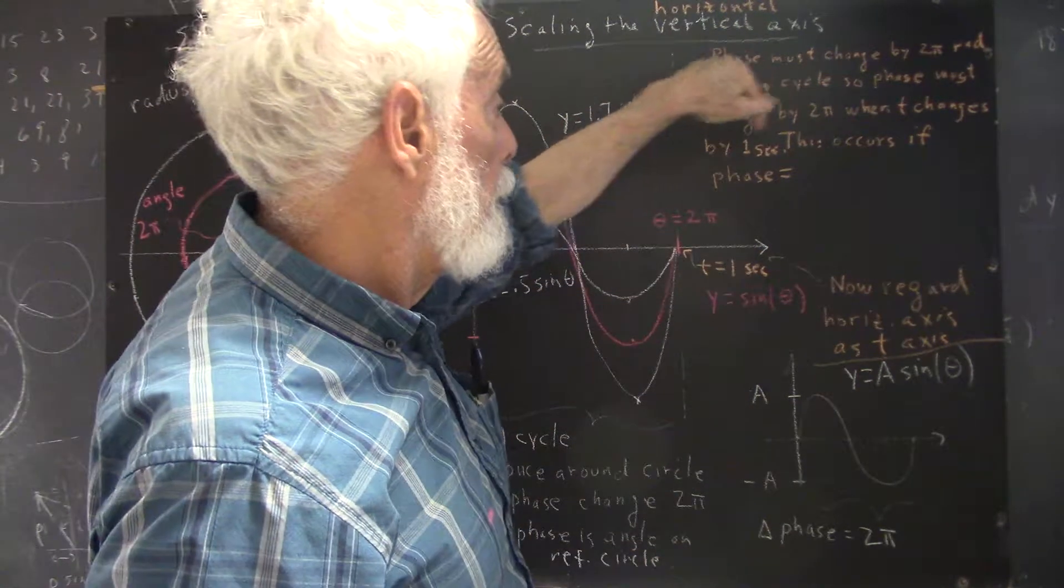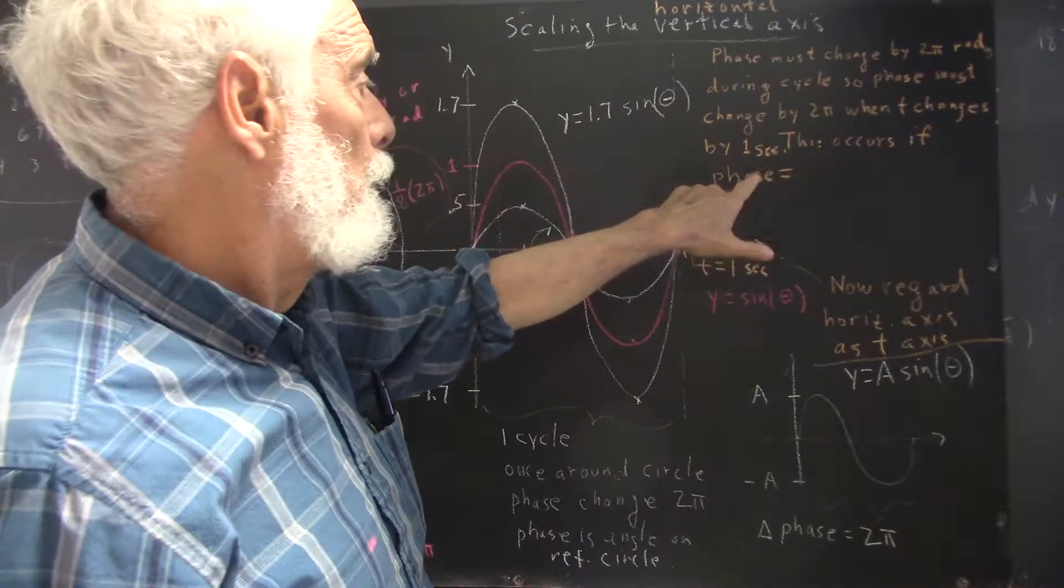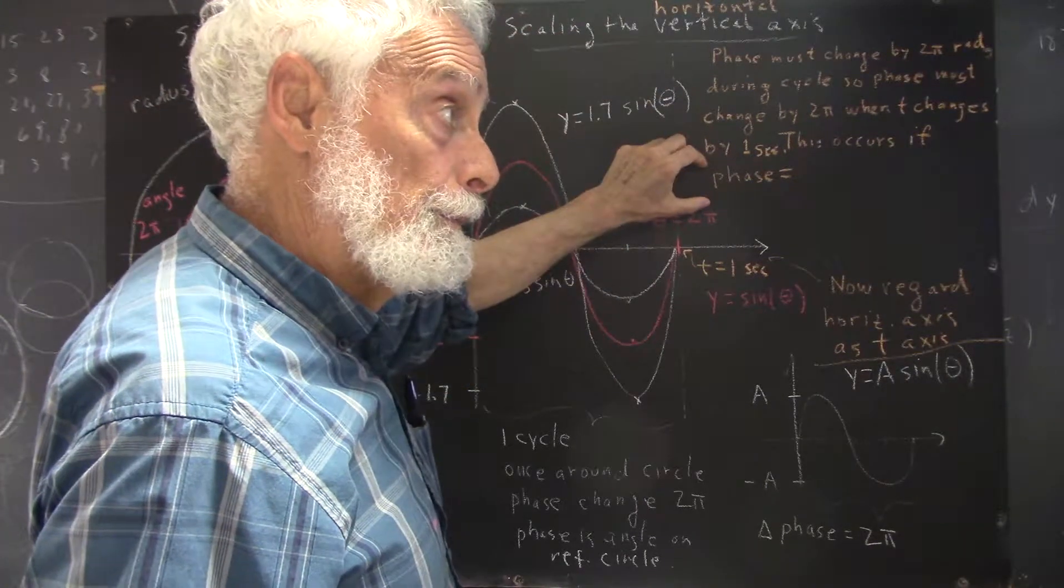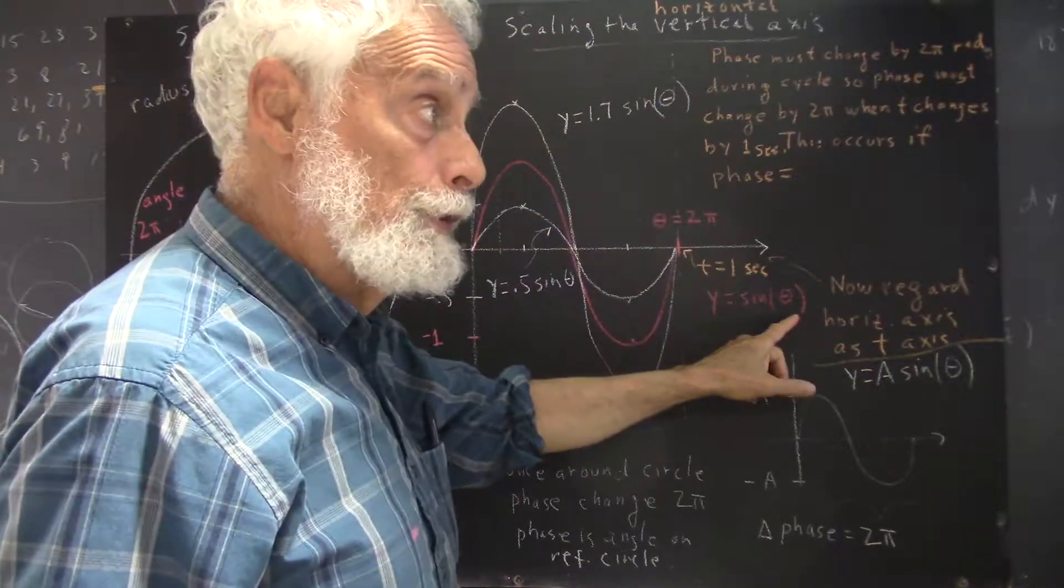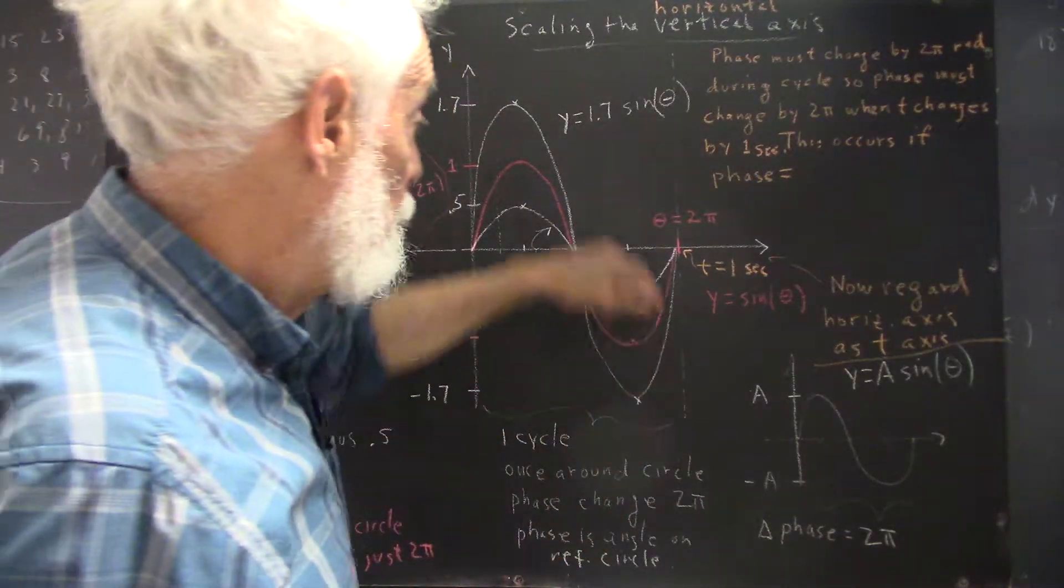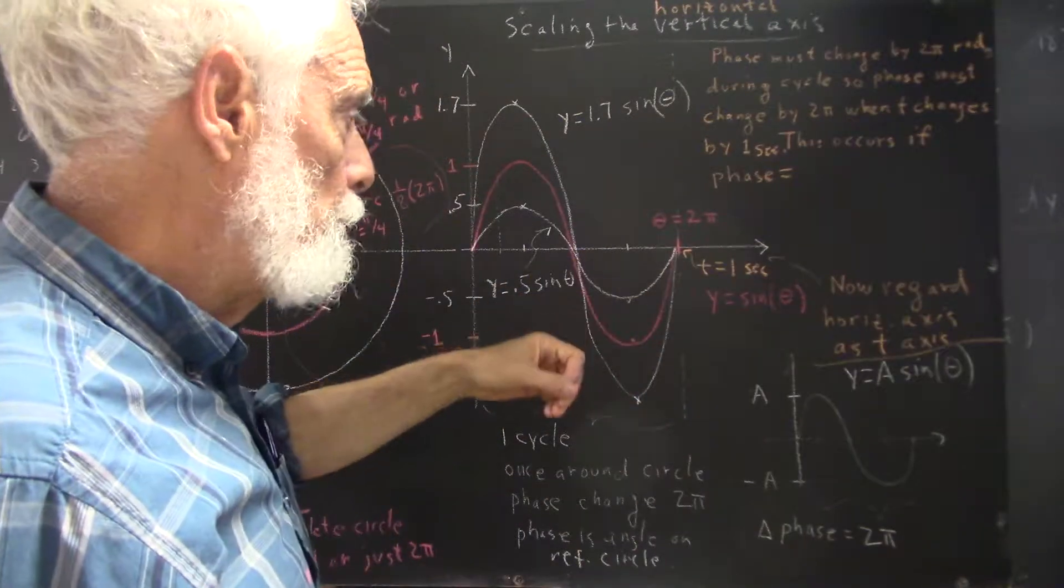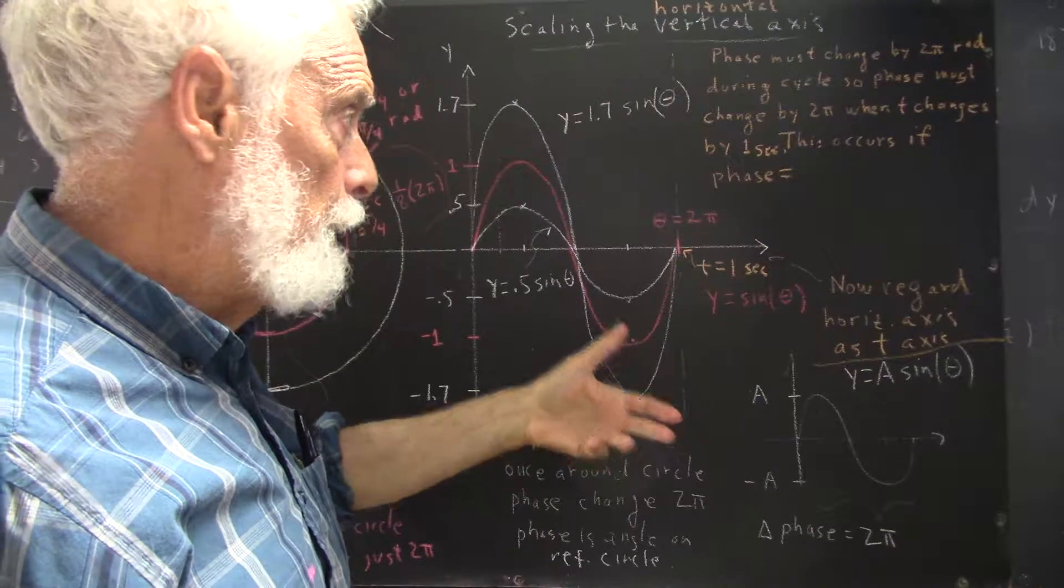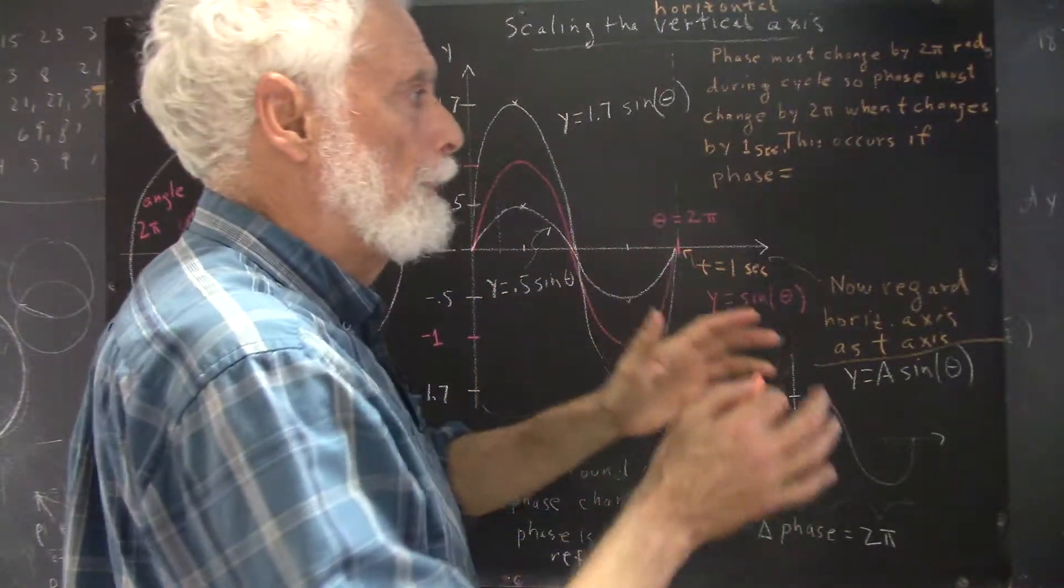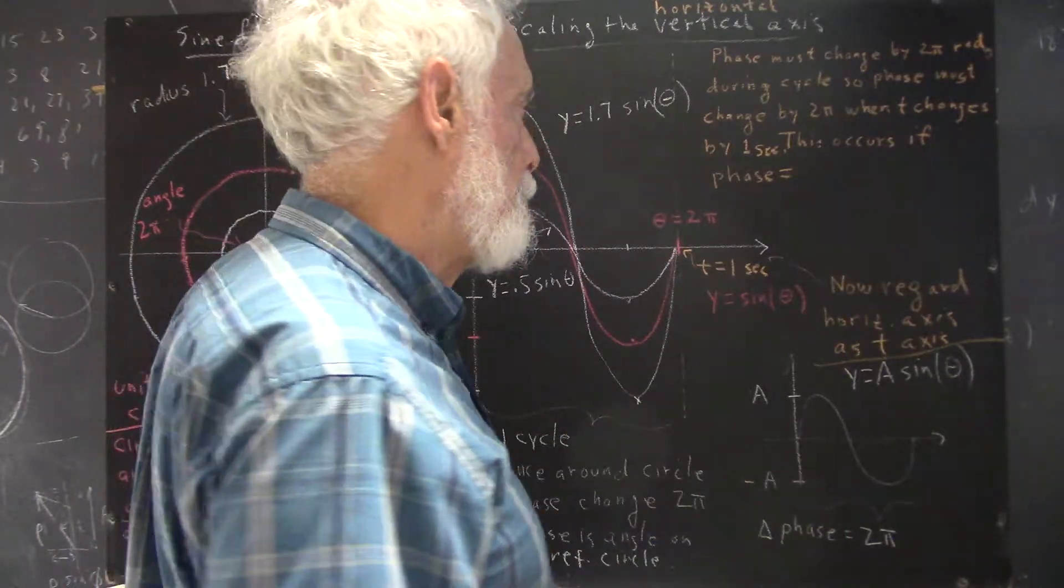So how are we going to accomplish that? We need a different expression for our phase. The phase was just the angle theta on the original model where theta equals 2π at this point. Now what's the phase going to equal? It's not going to equal theta, it's not going to equal t, but it's got to equal something that changes by 2π radians when t changes by 1 second. See if you can write an expression that would do that.